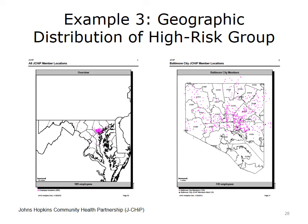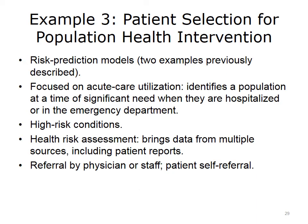So we've looked at two examples of using risk prediction models to select patients for population health intervention. Another way to select patients is through an acute care utilization focus—identifying patients when a significant need occurs, such as a hospitalization or an emergency department visit. Or we could focus interventions on patients with a particular high risk condition, such as diabetes or chronic renal failure. Health risk assessment data often draw from multiple sources, including patient reports. If patients report, for example, diabetes, poor self-management behaviors, or poor lifestyle behaviors, they may be good candidates for a population health intervention. Additionally, we can have referrals by physicians or staff, and patients and employees can refer themselves to population health interventions.